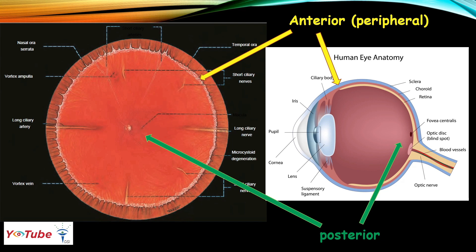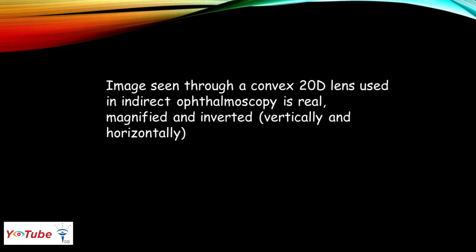It is important to know that when we describe a retinal lesion, anterior means towards the ciliary body or ora, and posterior means towards the posterior pole — that is, towards the disc and fovea. Also, the image seen through a convex 20-diopter lens used in indirect ophthalmoscopy is real, magnified, and inverted vertically and horizontally.